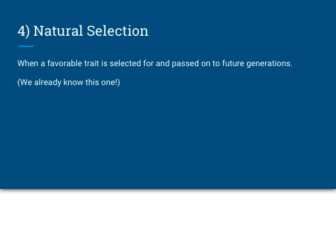The fourth factor is natural selection — we already know this one. Natural selection is when the environment changes, creating a struggle for existence. Those with favorable traits live longer, survive, have more offspring, and that trait becomes more frequent in the population.